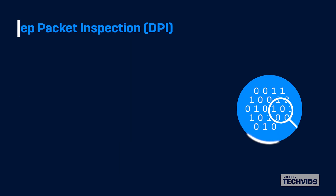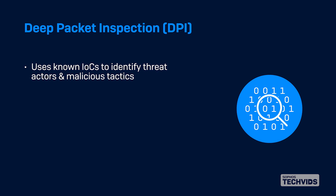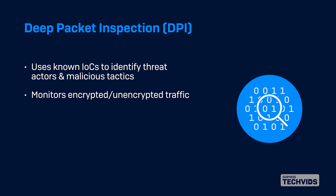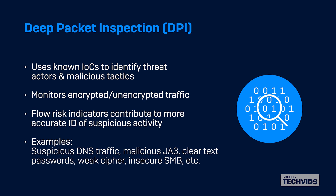First is the deep packet inspection engine. This uses known indicators of compromise to identify threat actors and malicious tactics, techniques, and procedures across encrypted and unencrypted network traffic. Dozens of flow risk indicators contribute to more accurate identification of suspicious activity when put into context with the other detection engines and related flows. Some examples are shown here.